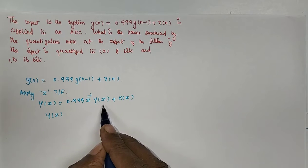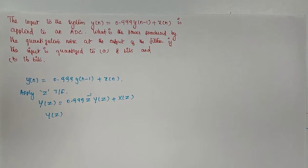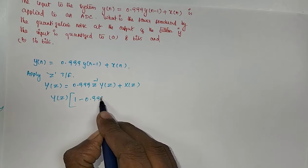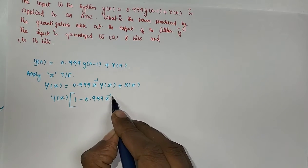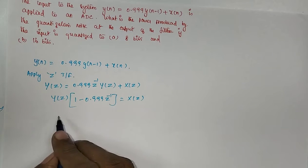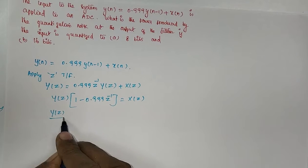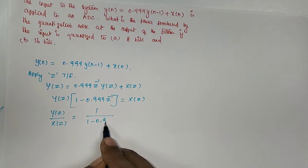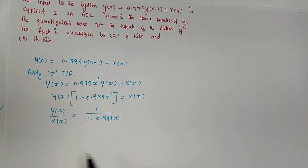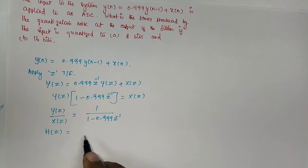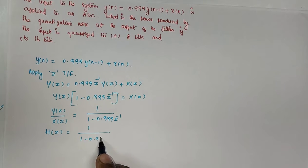Rearranging the Y(z) and X(z) terms: (1 − 0.999·z⁻¹)·Y(z) = X(z). From this the transfer function H(z) = Y(z)/X(z) = 1 / (1 − 0.999·z⁻¹).